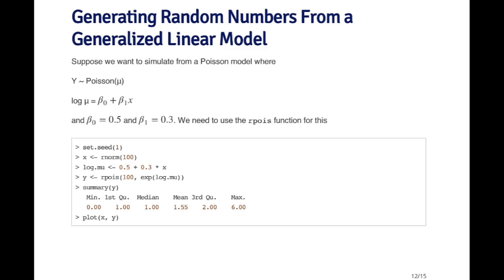Let's assume that the outcome y has a Poisson distribution with mean mu, and that log mu follows a linear model with intercept beta_0 and slope beta_1. So x is one of our predictors. Let's assume beta_0 is 0.5 and beta_1 is 0.3. How do we simulate from this model to get our Poisson data?